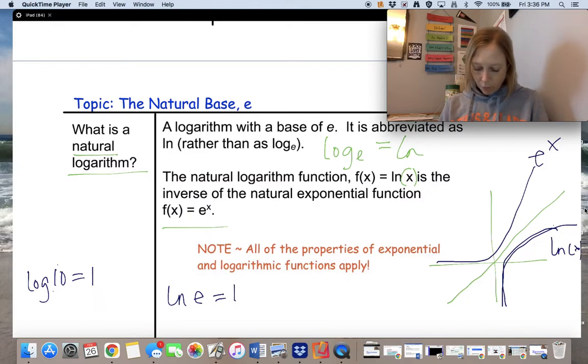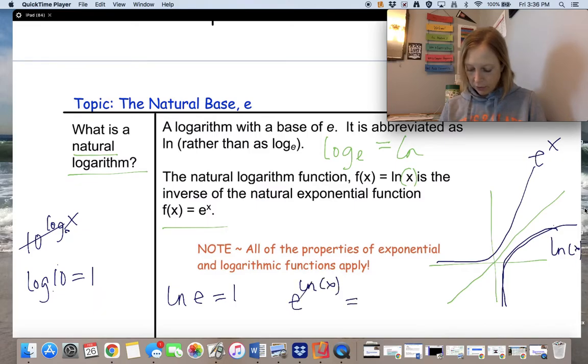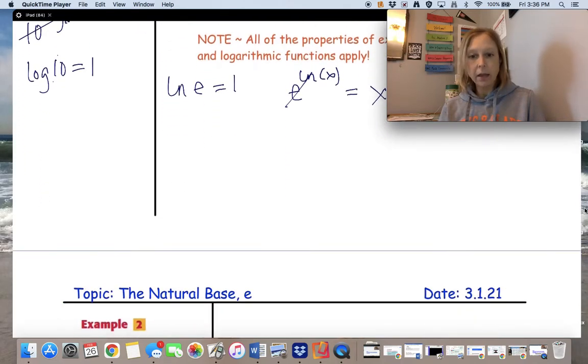Another thing we looked at before is if we had a log in the exponent, we could cancel this from base to base. Again, if the base of the logarithm match the base of the exponent. Same thing here. If I have e to the ln of x, that would simply just equal x. So whenever we get e and ln next to each other, it makes a 1. So that's going to be our goal whenever we're asked to simplify these expressions.